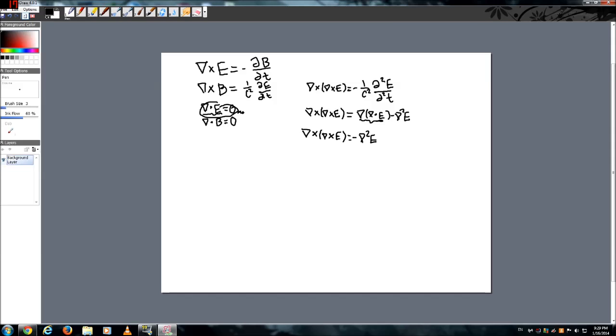Okay, so because these are two identities of the same expression, we can set these equal to each other. So let's do that. So down here, we're going to have negative 1 over c squared, multiplied by the second time derivative, right?